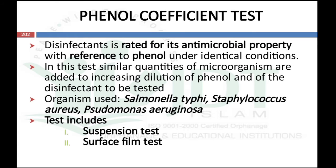Coming to the phenol coefficient test — the disinfectant is rated for its antimicrobial property with reference to phenol under identical conditions. Similar quantities of microorganism are added to increasing dilutions of phenol and increasing dilutions of the disinfectant to be tested. Different organisms like Salmonella typhi, Staphylococcus aureus, and Pseudomonas aeruginosa can be used as testing organisms. This phenol coefficient test can be done by either suspension test or by surface film test.